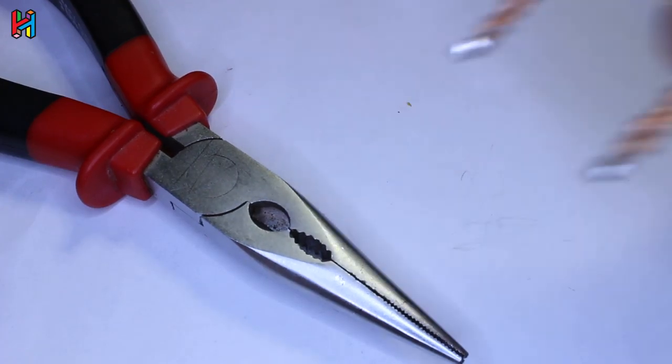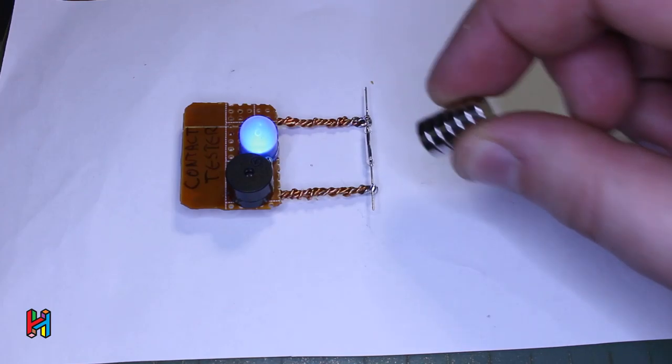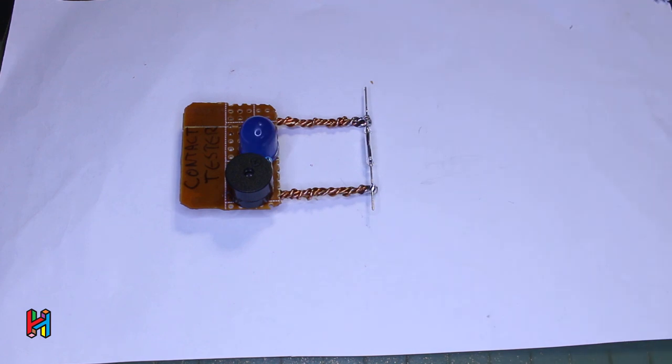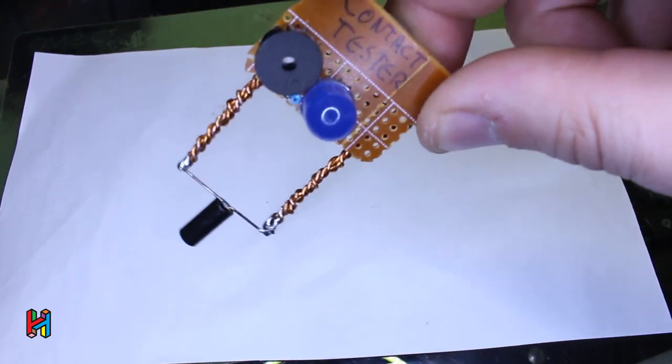This electric gadget can test wires for breaks, check LEDs, diodes, and just with adding a reed switch or tilt switch you can make a simple sensor alarm.